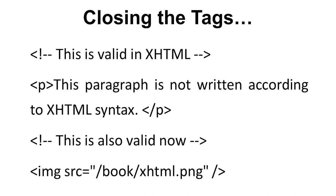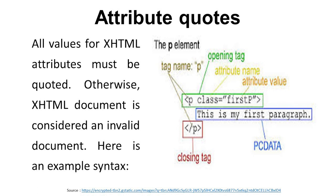Now we look at attribute quotes. All values for XHTML attributes must be quoted; otherwise the XHTML document is considered invalid. Here is an example: the p element has an attribute name of class, and the attribute value is provided in double quotes as 'first-p', meaning first paragraph. The data content is 'This is my first paragraph.' Then the closing tag follows. All XHTML attribute values must be quoted.